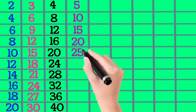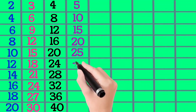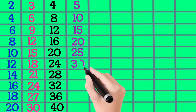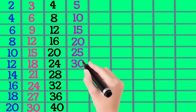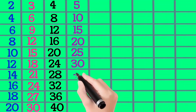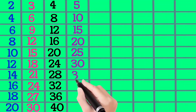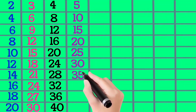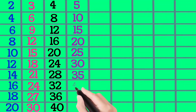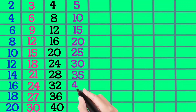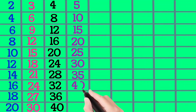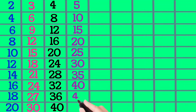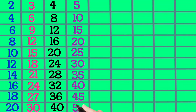5×6 is 30, 5×7 is 35, 5×8 is 40, 5×9 is 45, 5×10 is 50.